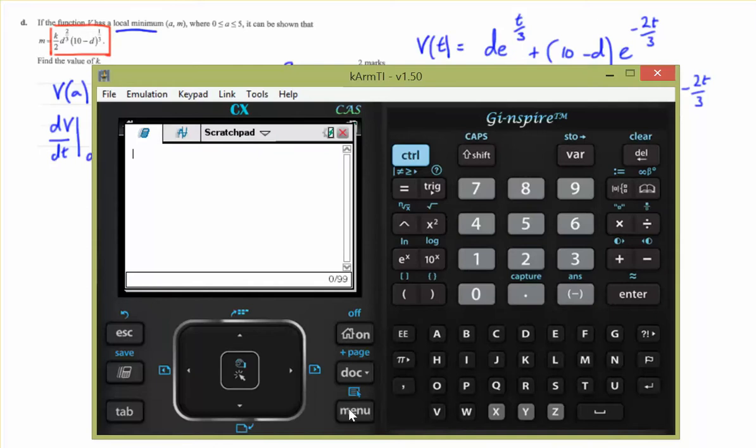Okay. So let's define that function. V of T equals D times E to the power of T on 3, and then we'll add 10 minus D times E to the negative 2 times T on 3. So we've defined our function.